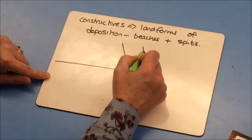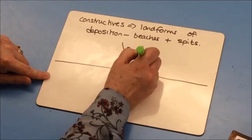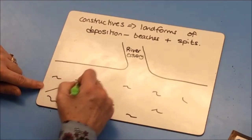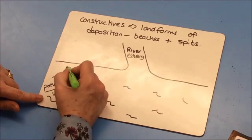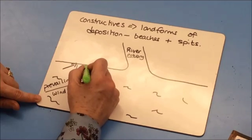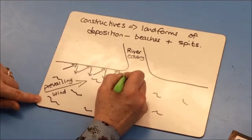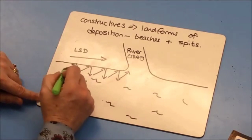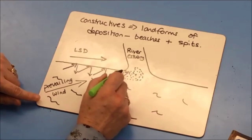First, draw your coastline — it has to have a bend in it. This bend represents a river estuary, where a river meets the sea. Waves approach the coastline at an angle in the direction of the prevailing wind. The swash goes up the beach at an angle but returns in a straight line — this zigzag motion is longshore drift. At the bend in the coastline, that movement continues and material is carried out to sea, where it is deposited to form a spit.